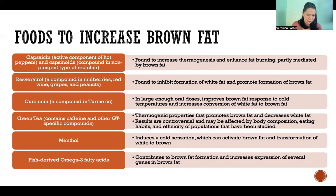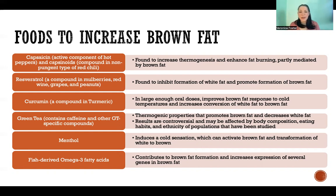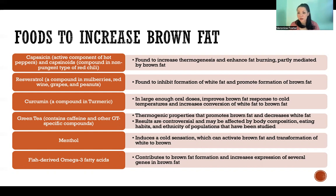Resveratrol is a compound found in mulberries, red wine, grapes, and peanuts. It has been found to inhibit formation of white fat and promote formation of brown fat — so that is going in the direction that we want to go.